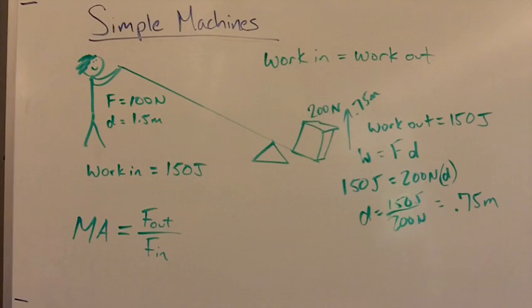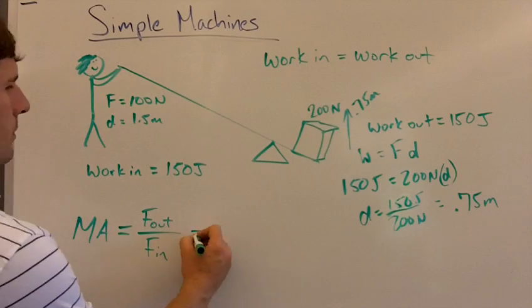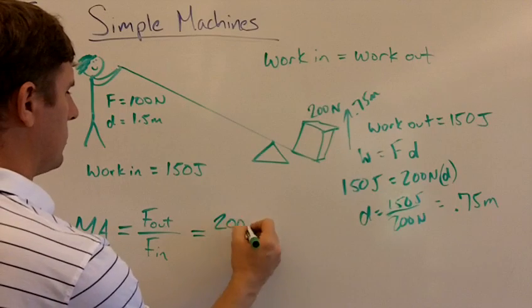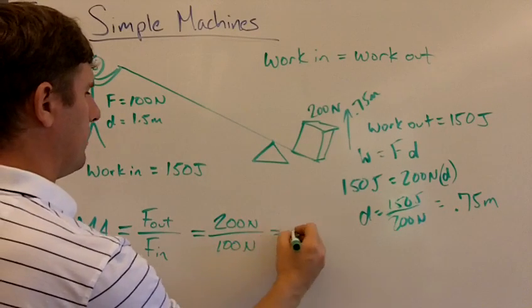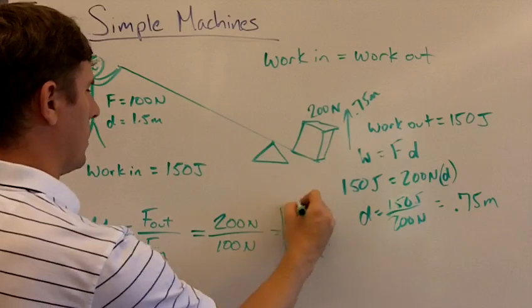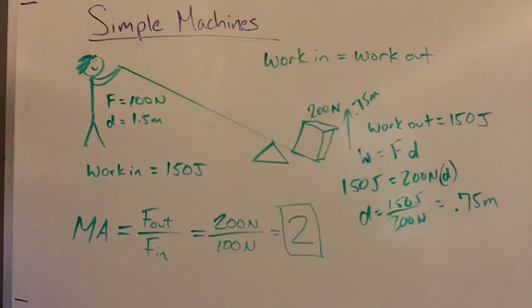Remember, it's not work out over work in. It's force out divided by the force that you put in. Well, if this person puts in 100 newtons of force and gets out 200 newtons of force, then we would say 200 newtons divided by 100. The mechanical advantage of this lever is 2. No units for mechanical advantage.